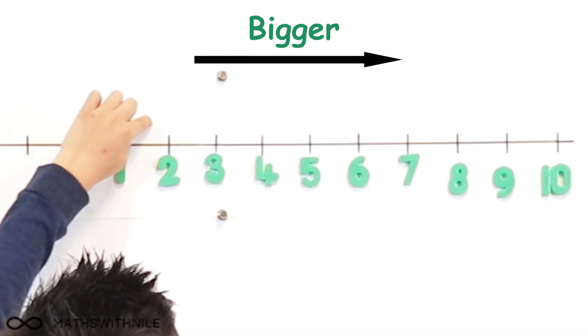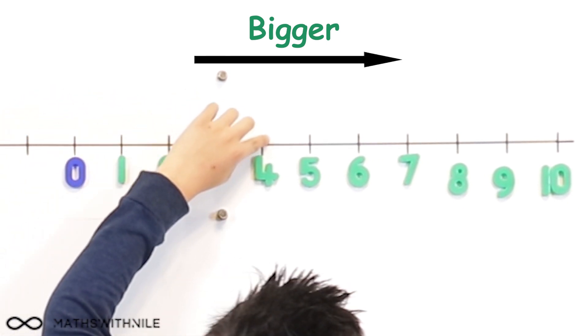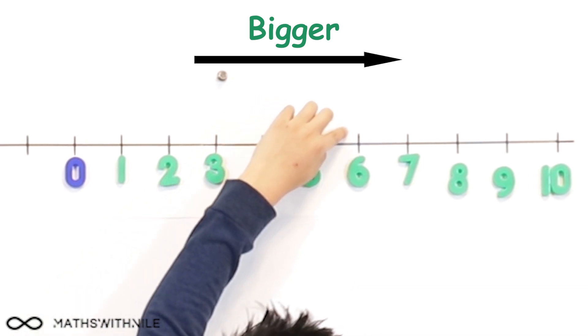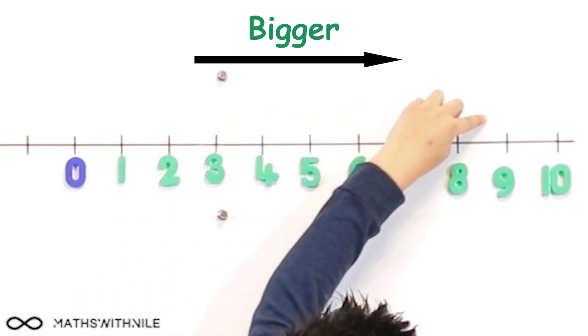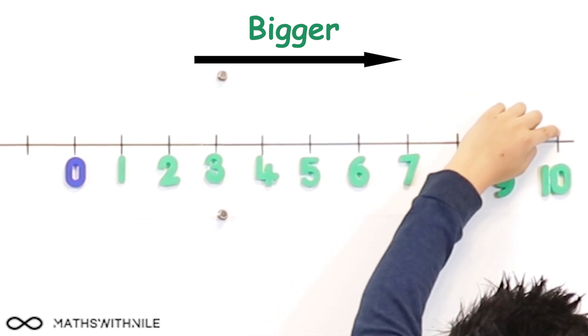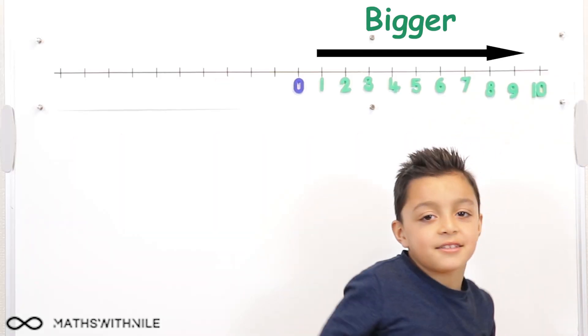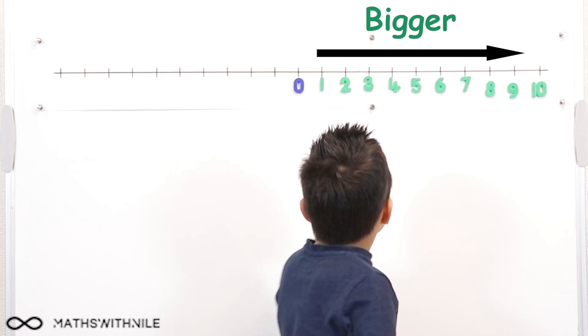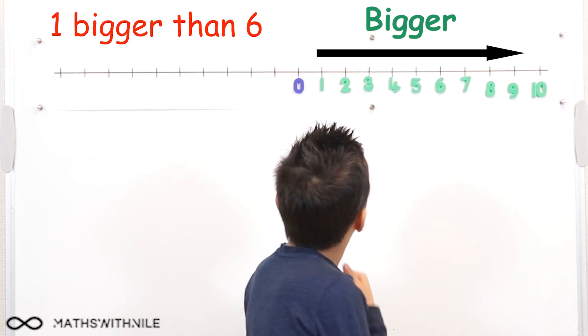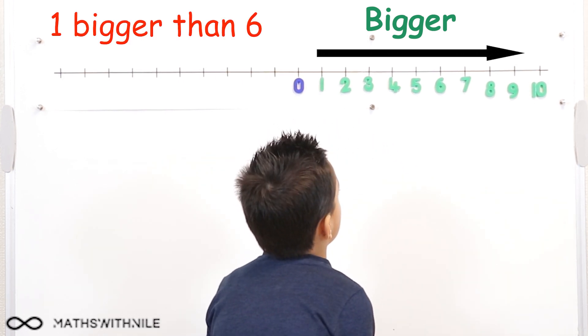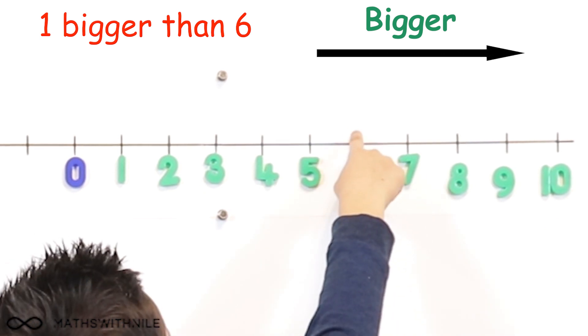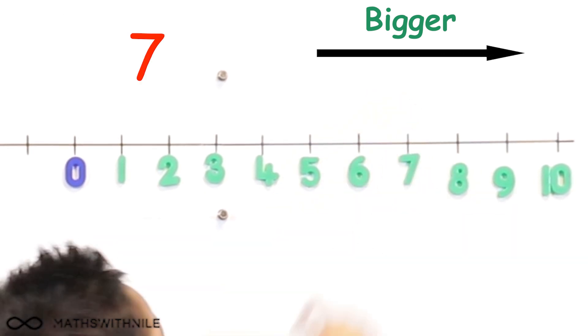So can you just move your finger from number to number, showing us the numbers getting bigger? One, two, three, four, five, six, seven, eight, nine, ten. Brilliant. So what is one bigger than six, one more than six? Let's show it on the number line. Six, seven. Good.